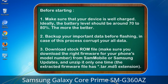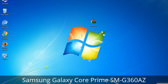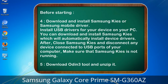3. Download the stock ROM file. Make sure you download the right firmware for your phone's model number from Sammobile or Samsung Updates, and unzip it only one time. The extracted firmware file has a *.tar.md5 extension. 4. Download and install Samsung KIS or Samsung mobile driver, and install USB drivers for your device on your PC. You can download Samsung KIS which will automatically install device drivers.